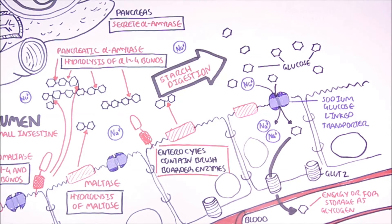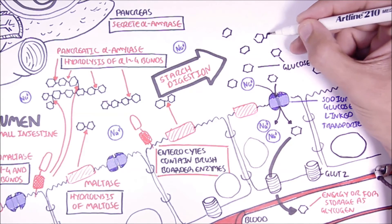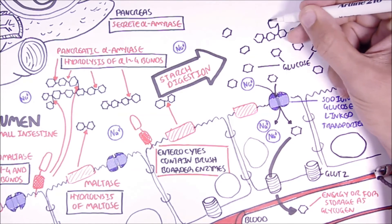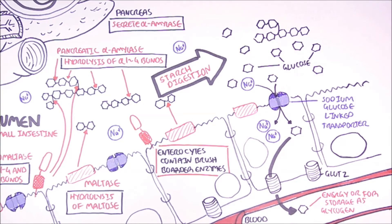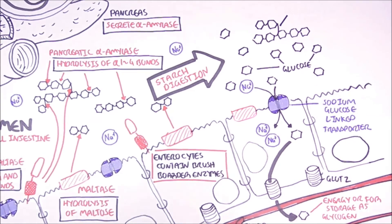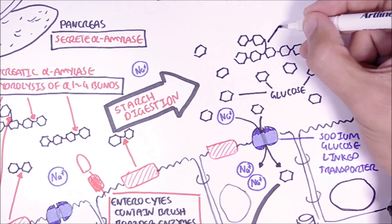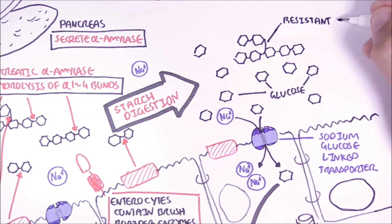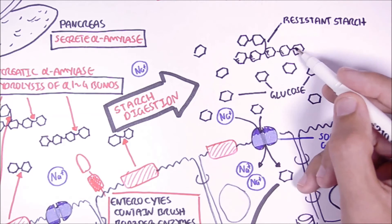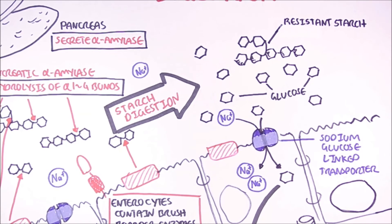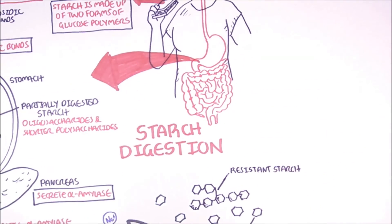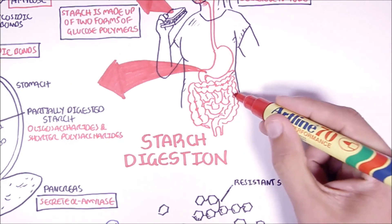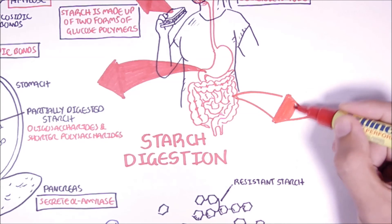However, not all portions of starch are digested in the small intestine. The portion of starch that resists digestion in the small intestine is known as resistant starch. And this fraction of starch will essentially reach the colon.